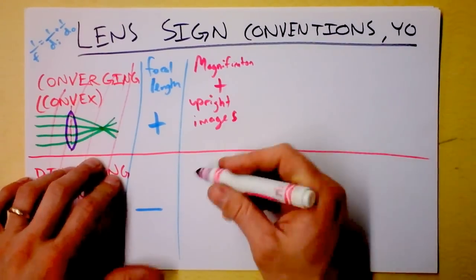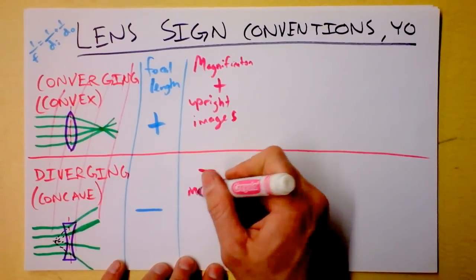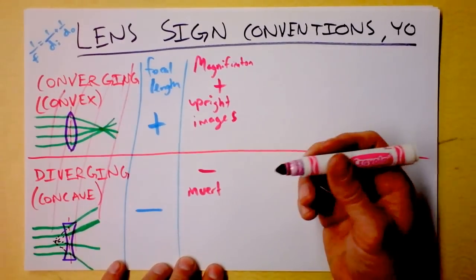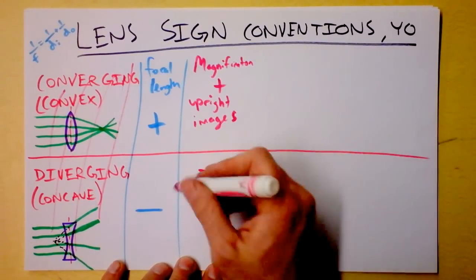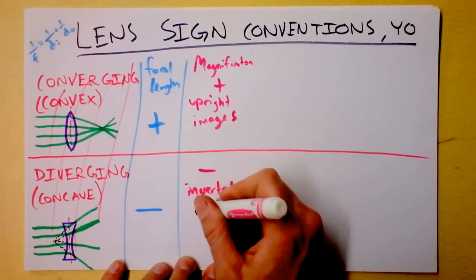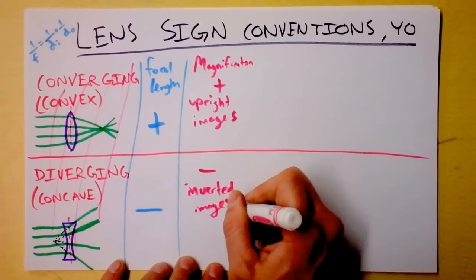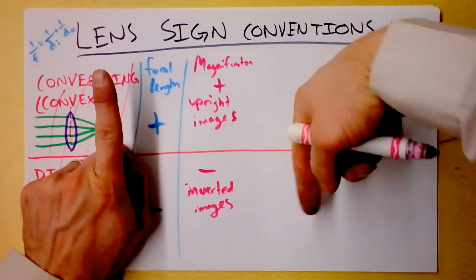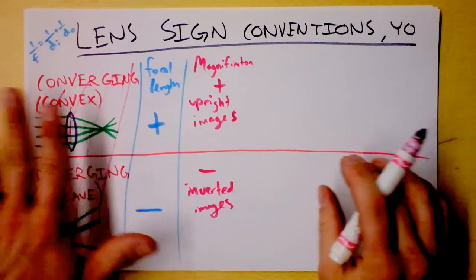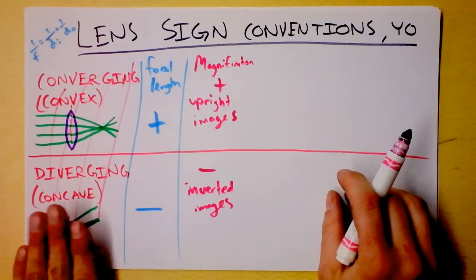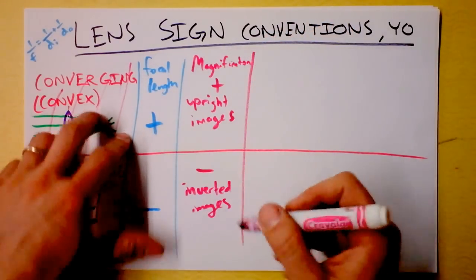And magnification is negative for inverted images. This is the definition of magnification, people. I'm sorry to bother you. Inverted images, that's when the object's like this and the image's like that. So a lot of times you'll get that with converging lenses. I don't think you can get it with diverging lenses. But we'll investigate that later.